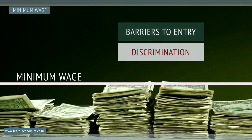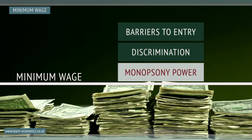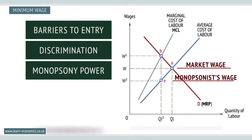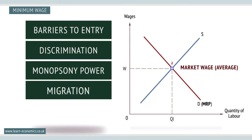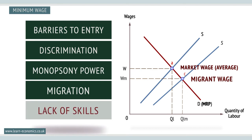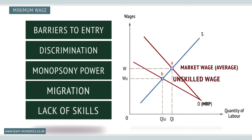Also, where markets are dominated by a single employer — a monopsonist — average wages may be below the competitive market rate, with individuals unable to bargain for wage increases. Low pay can also result from inward migration from low-pay countries, which drives down the wages for domestic employees. Low pay often reflects a lack of skills and a very elastic demand for labour, as firms have a large pool of workers to choose from.